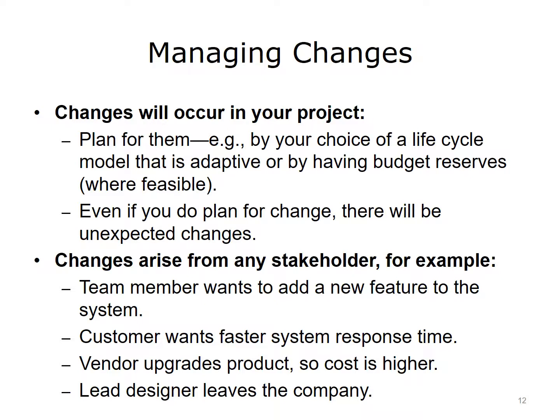Even with all of your monitoring and controlling work, your project will change without warning. Team members will leave, a customer wants a faster system response time, a vendor reprices a product. All of these unplanned occurrences will affect your project. So try to expect the unexpected by using an adaptive lifecycle model to plan your project. Choosing an adaptive, iterative, or agile model can allow for greater flexibility than a linear project model.